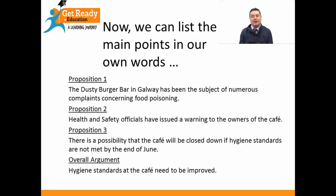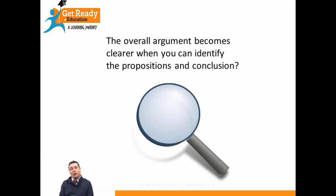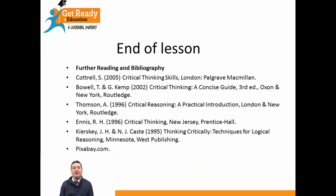We can list these main points in our own words if we want to. Proposition 1: The Dusty Burger Bar in Galway has been the subject of numerous complaints concerning food poisoning. Proposition 2: Health and safety officials have issued a warning to the owners of the cafe. Proposition 3: There's a possibility the cafe will be closed down if hygiene standards aren't met by the end of June. And the overall argument: hygiene standards at the cafe need to be improved. Can you see that the overall argument is clearer when we identify all the propositions that lead to the conclusion?